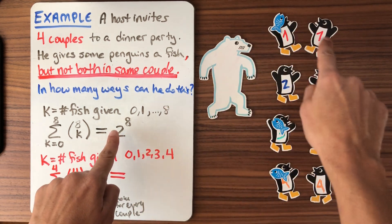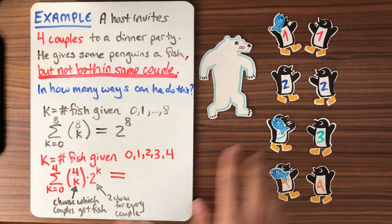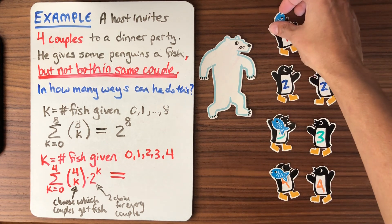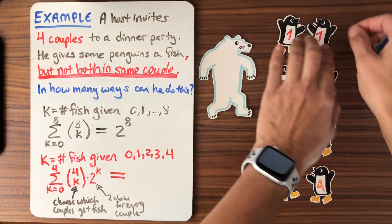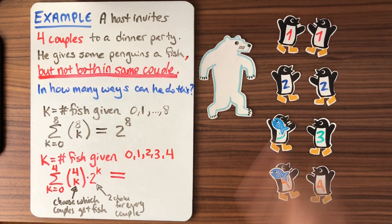We went to every penguin and we said, you get one or you don't get one. And there were two choices for every penguin. Now we don't want to think of the penguins as individuals. We want to think of them as partnered up, as couples. And now we take the same thing and we consider one couple. What are our options to do with fish for this one couple here, okay?